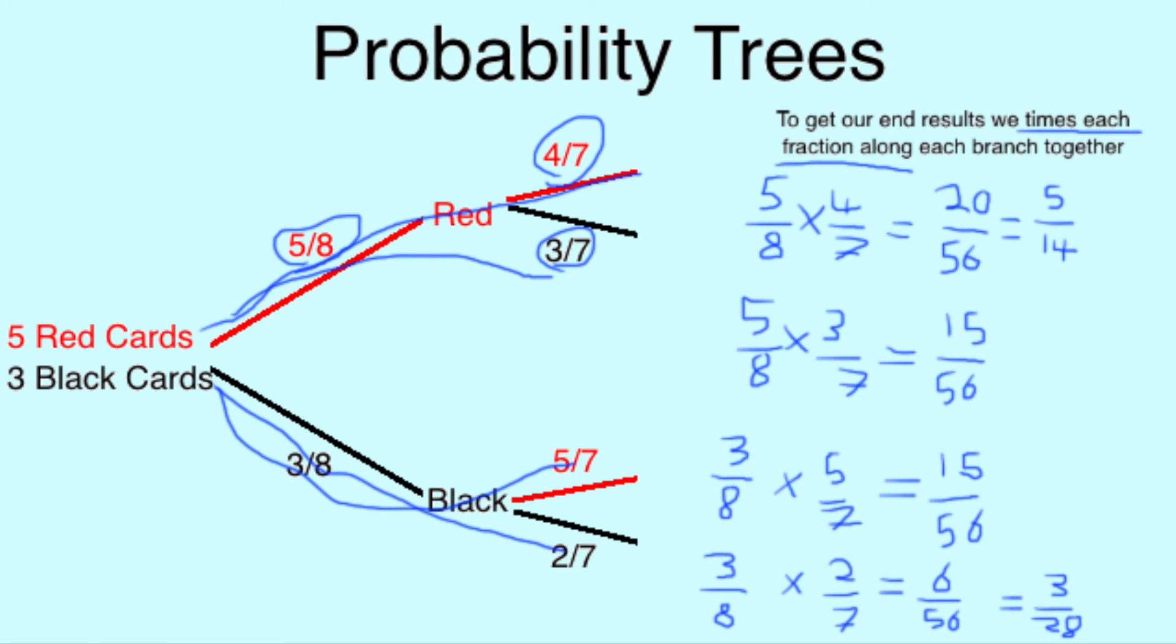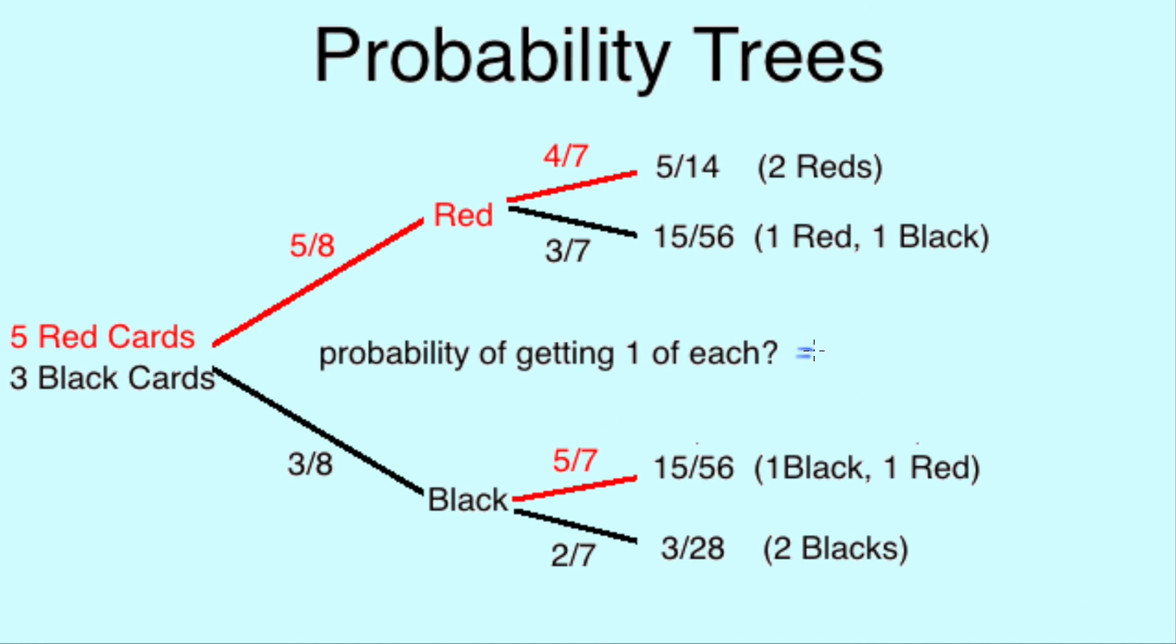Now if asked to find the likelihood of a result, for example, what is the probability of getting one of each colour, we simply add the branches with the relevant results together. So for our example, the answer would be 30 over 56, or 15 over 28.